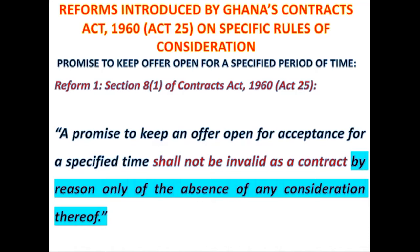In other words, in Ghana, when you make a promise to keep an offer open for acceptance for a specified period of time — eight months, ten months, twelve months — and there is some evidence that the offeree accepted that promise, then the promise you made to keep the offer open for acceptance shall not be invalid merely because the other party has failed to provide some form of consideration.